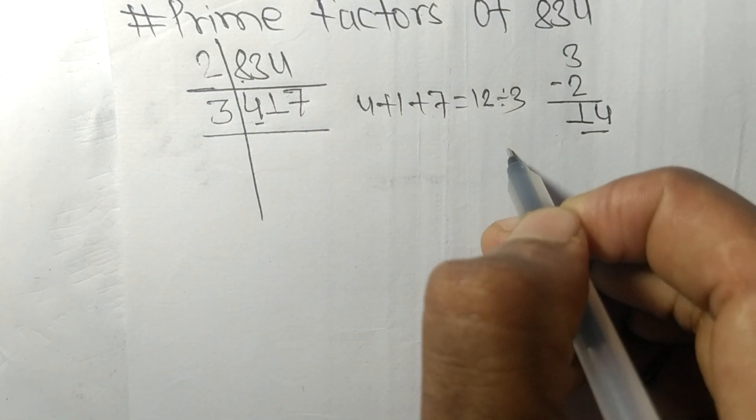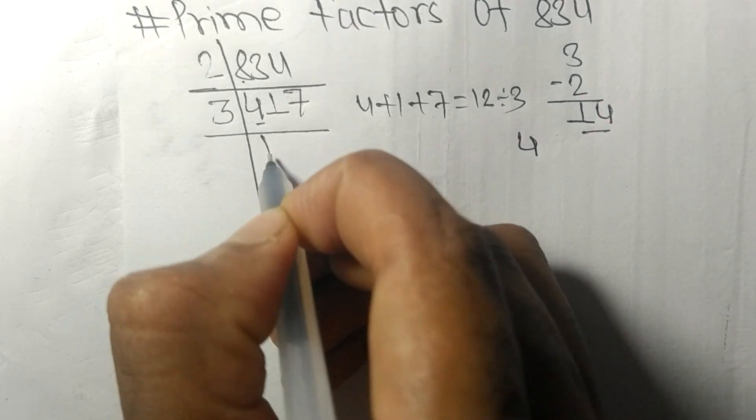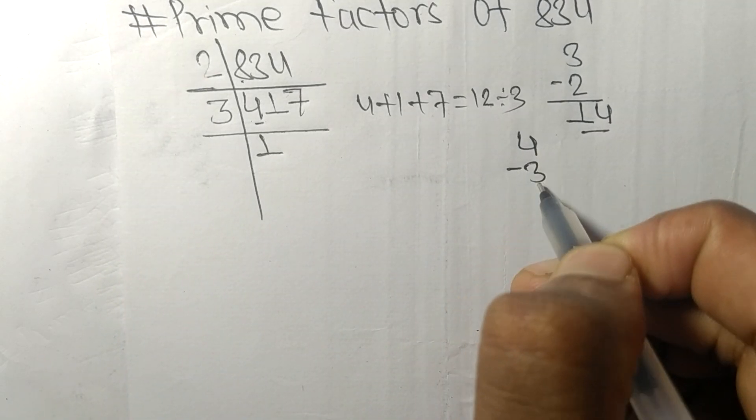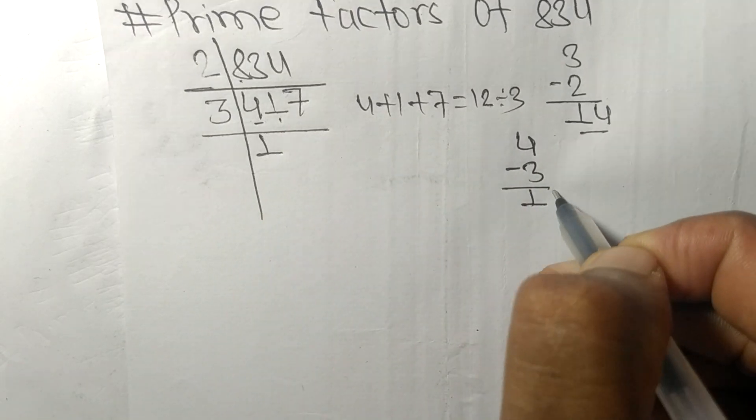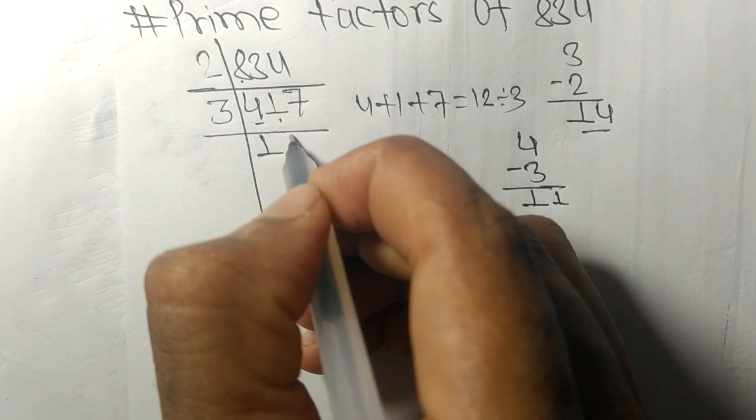So first we have 4. 3 times 1 means 3. On subtracting we get 1, and this becomes 11. So 3 times 3 means 9.